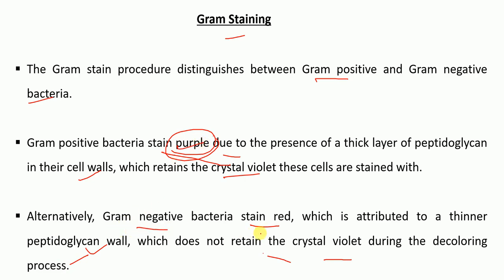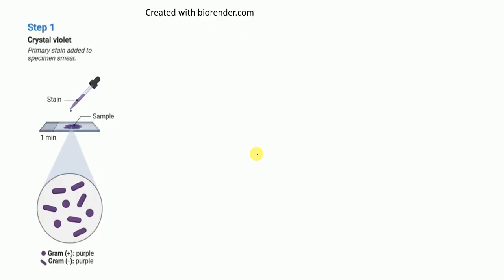Gram positive bacteria are stained purple whereas gram negative bacteria are stained red in the gram staining procedure. The first step is the addition of crystal violet, which is the primary stain, to the specimen smear. The crystal violet is added to the specimen smear and it is allowed to stand for about one minute.